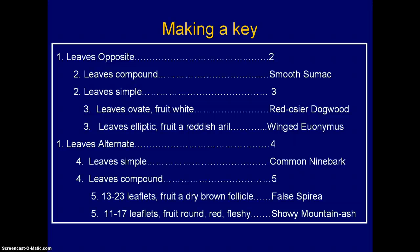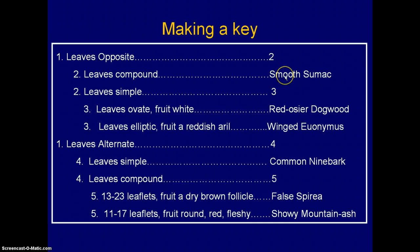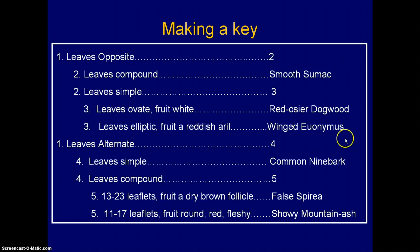So what we've done is taken the six species that we had and all the characteristics we identified for them, and we've now built a key from that. You can see there are six species in the key. You've got two number 1 choices; the first went to number 2 giving two choices, one of which was unique — going right to smooth sumac. The other, with leaves simple, had more than one opposite simple leaf, so we went to number 3 with two choices: leaves ovate with white fruit, or leaves elliptic with reddish arrow fruit. And so on — that's basically how it works.